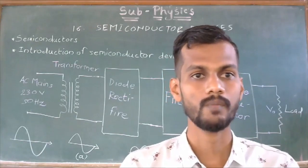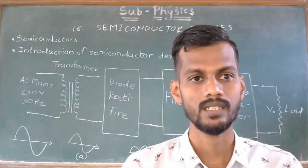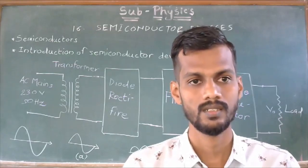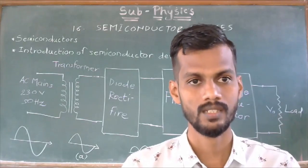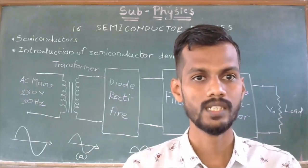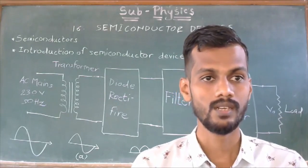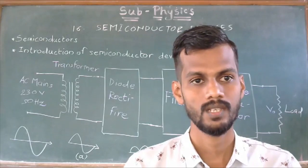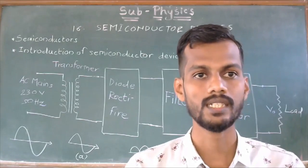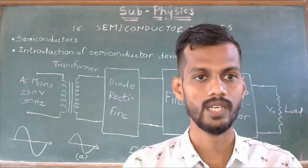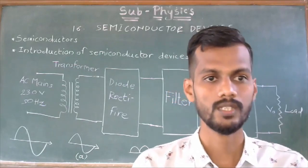Conductor is a material through which electric current easily passes. Insulator is a bad conductor of electricity. Means, through a material which is insulator, current does not pass. Then what is semiconductor? Semiconductor is a material whose electrical conductivity lies between conductivity of conductor and that of insulator.